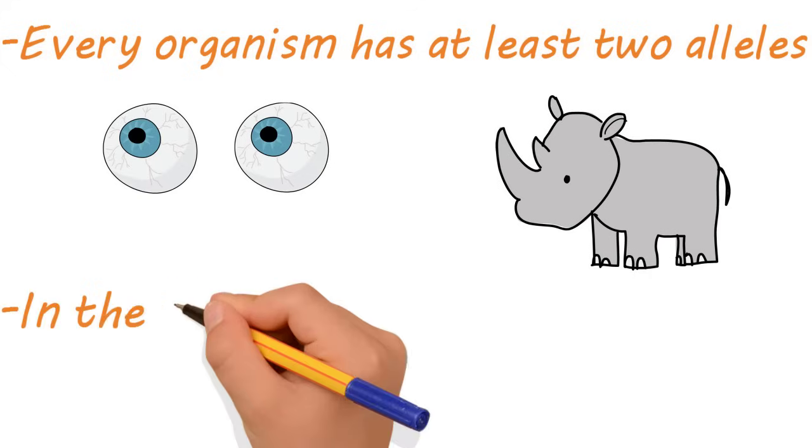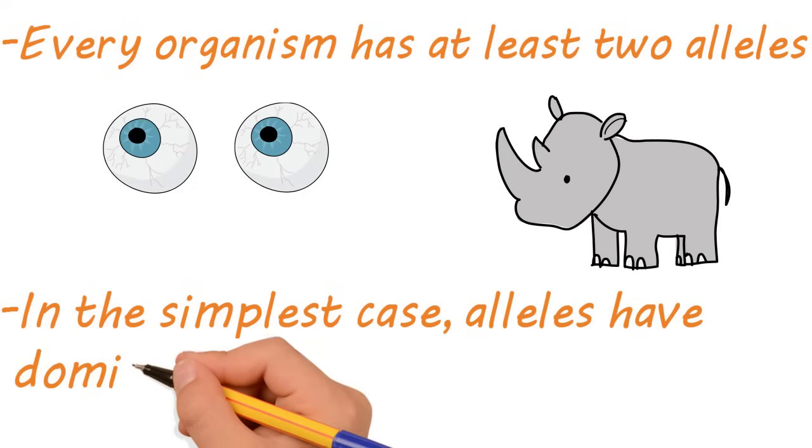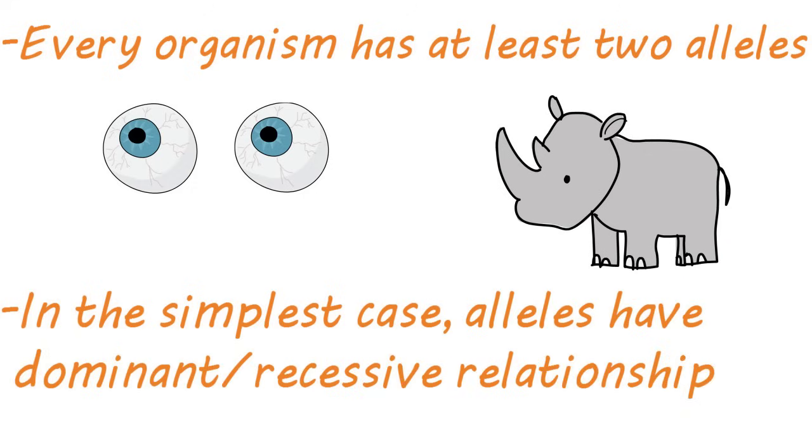In the simplest scenario, these alleles have a dominant and recessive relationship, which means that one form of the allele, the dominant allele, is expressed over the other form, the recessive.